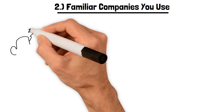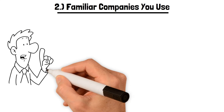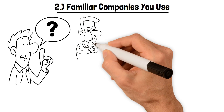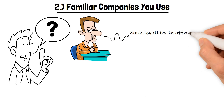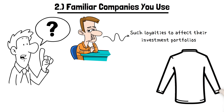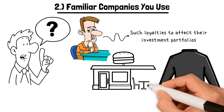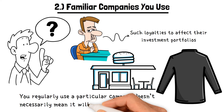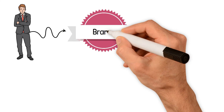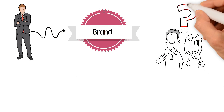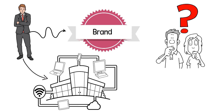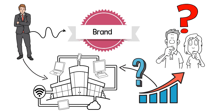Familiar companies you use. Remember at the start of this video how I mentioned that we humans tend to display an inclination towards specific brands or companies. Well, some investors make the mistake of allowing such loyalties to affect their investment portfolios. Whether it's the clothing brand that you tend to wear or the fast food restaurant that you tend to favor, just because you regularly use a particular company doesn't necessarily mean it will be a great investment. Although you may be a fan and regular user of the brand, how confident can you be that a significant number of other people are? Moreover, although you may be familiar with the company's products, how familiar are you with the long-term growth prospects of the company?